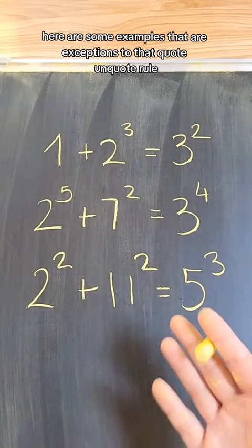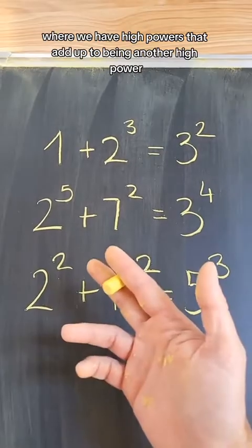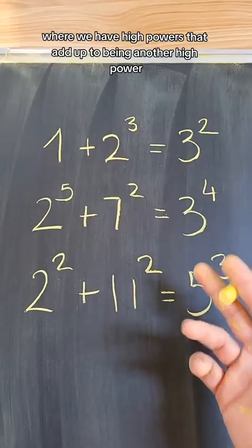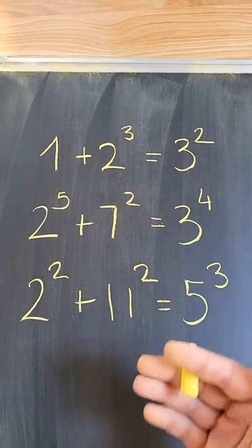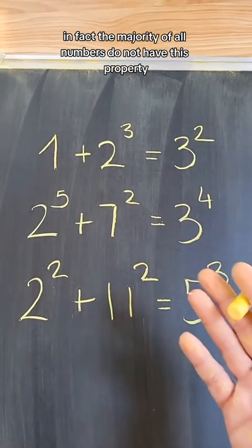For instance, here are some examples that are exceptions to that rule, where we have high powers that add up to being another high power. So the conjecture says that these are very rare. In fact, the majority of all numbers do not have this property.